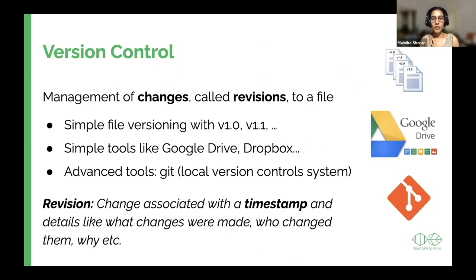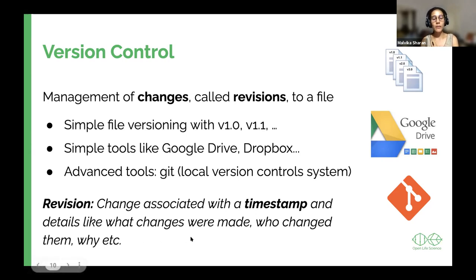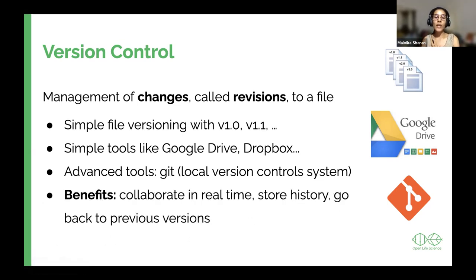You have already worked with version control — it's not just GitHub. Google Drive does version control; it has the whole preservation of history. In Etherpad, you will see a timer, and when you click on it, it allows you to browse back to what was written earlier. Then there is Git, which is an advanced local version control system, and GitHub is built on that. You can work locally on your computer, make changes, and send that information online to GitHub. What we call a revision is a change associated with a timestamp, including details of what was changed, who changed it, and why. The benefit is you can collaborate in real time, store history, and go back to a previous version without getting confused.